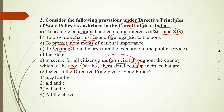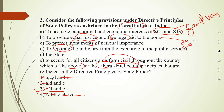Now let's categorize these under liberal intellectual principles. Option one — promote education and economic interests of SC/ST — this falls under Gandhian principles. Option two — promote equality and free legal aid to the poor — this is a socialist principle. The liberal intellectual principles under DPSP form the answer to this third question.